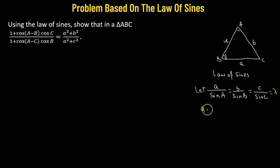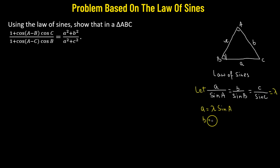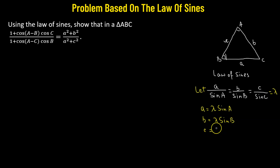Setting each ratio equal to lambda helps us define: a equals lambda times sin A, b equals lambda times sin B, and c equals lambda times sin C.